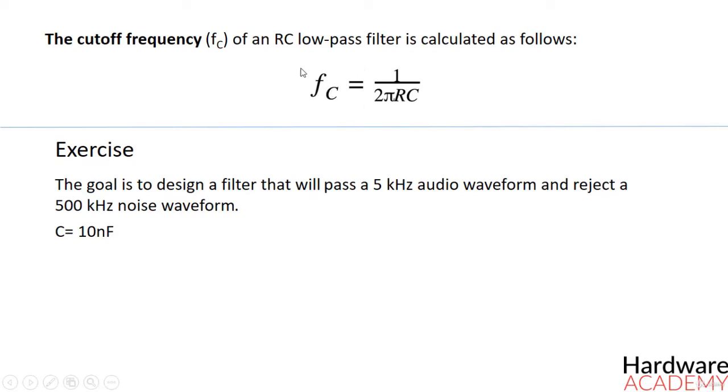Let's look at a simple design example. Capacitor values are more restrictive than resistor values, so we will start with a common value of capacitance such as 10 nF, and then we will use the equation to determine the required resistance value.